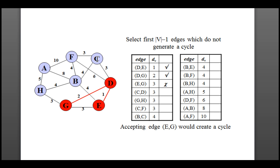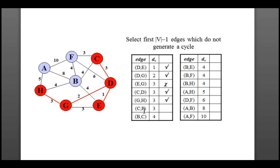We cross out edge EG. The next edge is CD — we take it because it's a minimum weight. Then G and H — we also take this one because the weight is minimum. Then C and F — we take this one also since the distance from C to F is minimum compared to D to F or any other. Then B and C — we take it because it is the shortest distance from C to B.